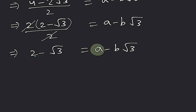So here, which number is a? The value of a is 2. And here we have √3 with coefficient — since b is the coefficient of √3 and that coefficient is 1, so what is the value of b? It is 1. Because b is the coefficient of √3, and the sign is minus.